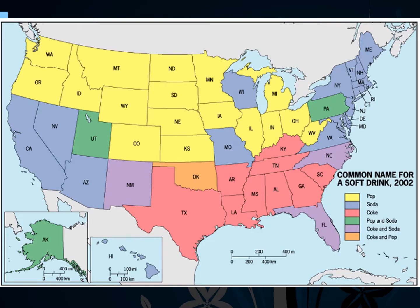Here we see a map of isoglosses for the name of a soft drink. Different parts of the United States, depending on their different dialects, call soft drinks different things. We also have an isogloss between where people mainly say 'y'all' versus 'you guys.'